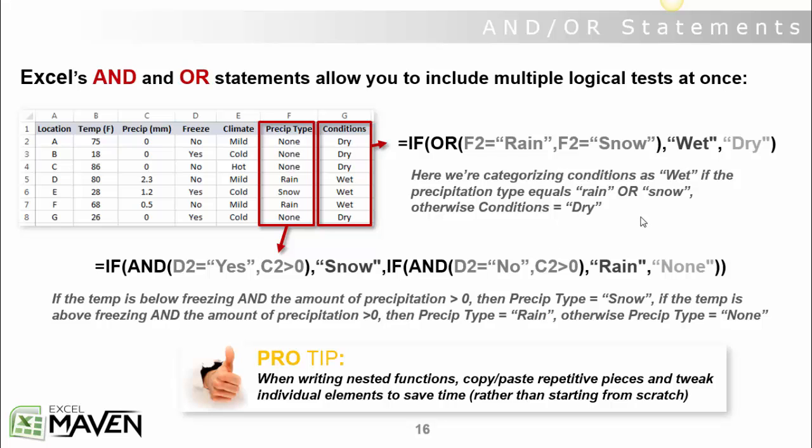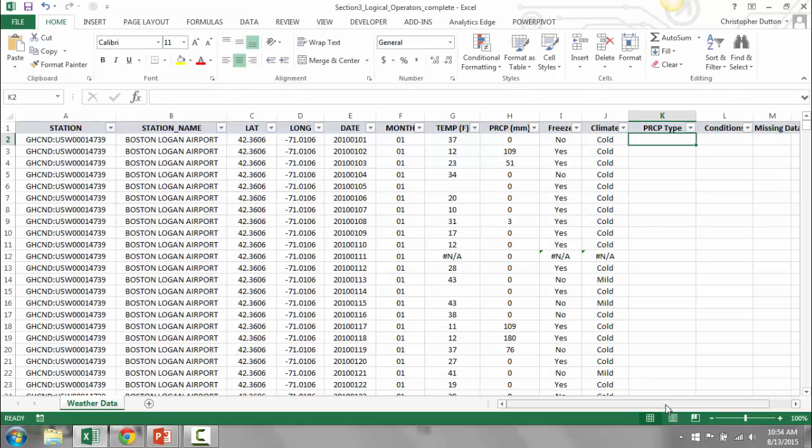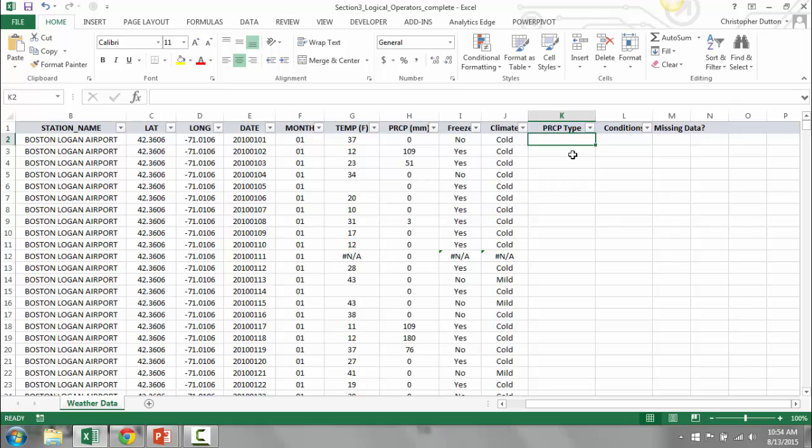Quick tip here: when you're writing nested functions, especially if you have a number of different logical tests all stacked together, you can just copy and paste pieces of your formula to save yourself some time. So rather than rewriting if and and if or statements from scratch, just copy and paste and build your formulas that way. So let's bump over to Excel and actually walk through these examples hands-on.